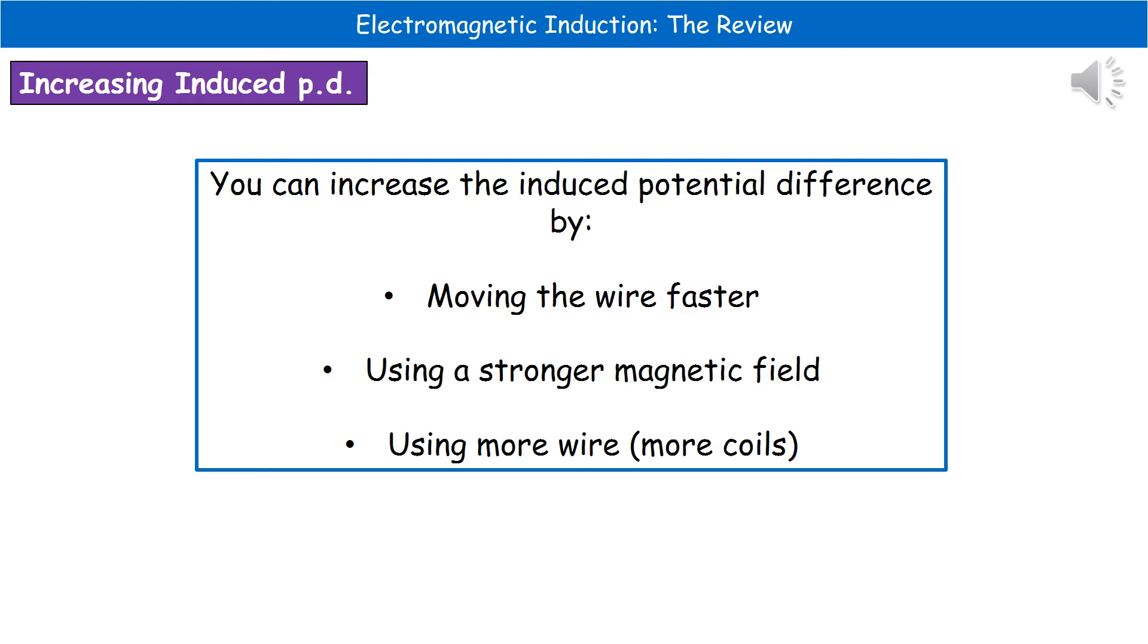We can use a stronger magnetic field because as we established earlier on in this topic, stronger magnetic fields have a greater number of field lines. And therefore, the wire would cut a greater number of them by moving in the same amount.